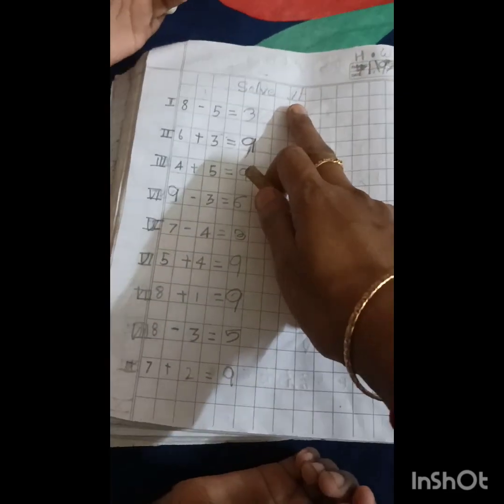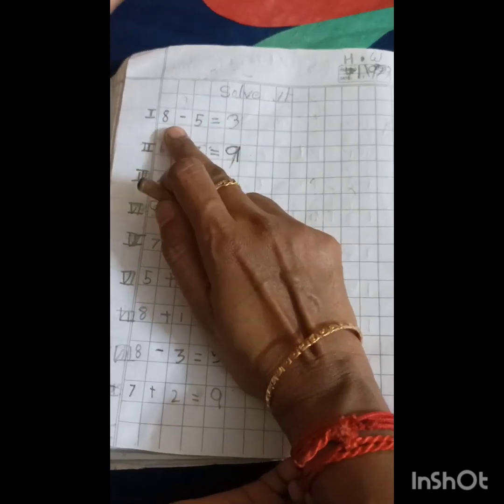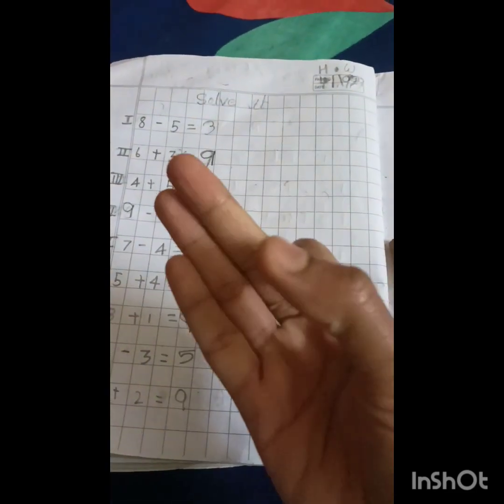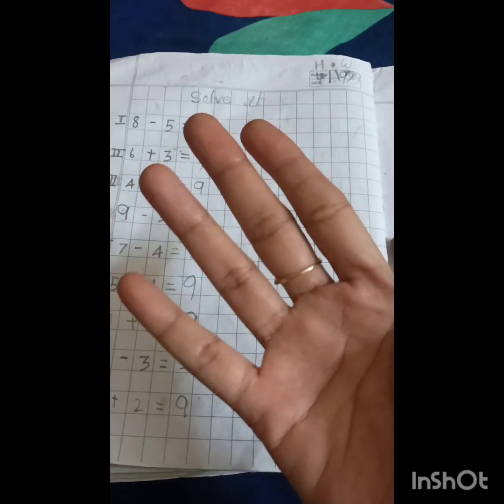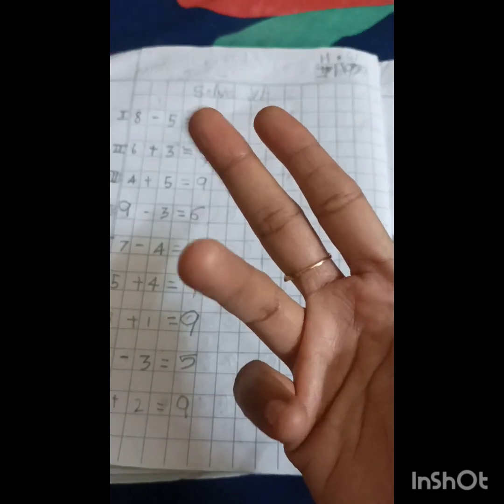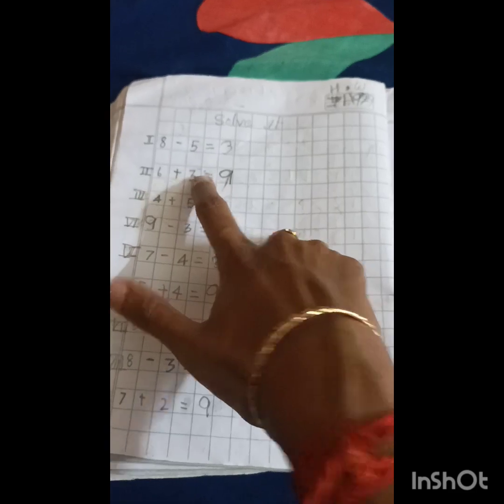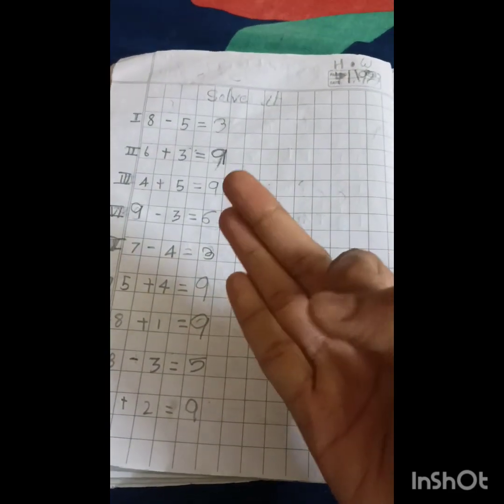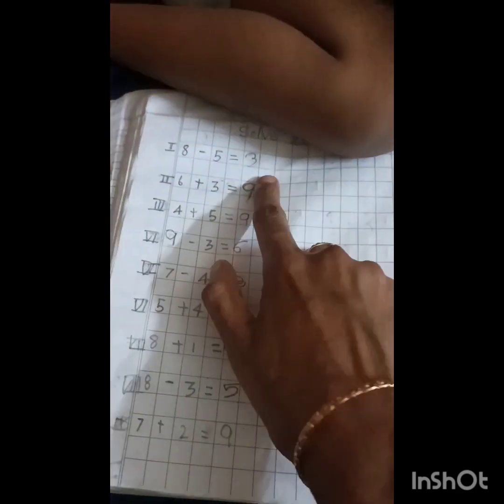Hi children, today we are going to see addition and subtraction together. The first one is 8-5. 8 in the mind, 5 in ants. You should go in reverse. Before 8 what? 7, 6, 5, 4, 3. The answer is 3. 6 plus 3, 6 in the mind, 3 in ants. 6 next number, 7, 8, 9. The answer is 9.